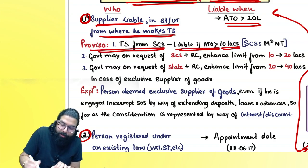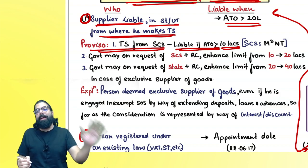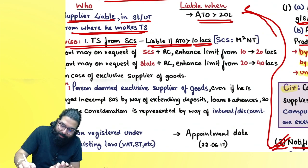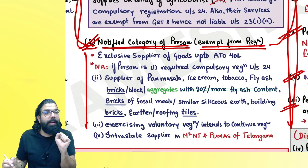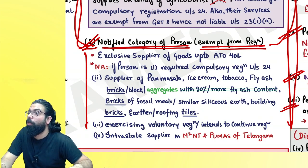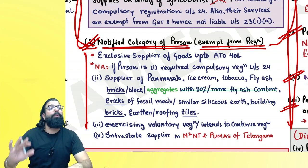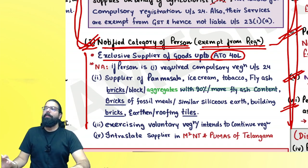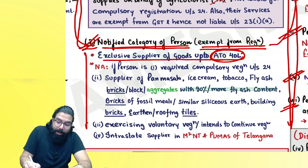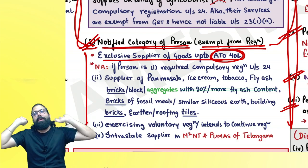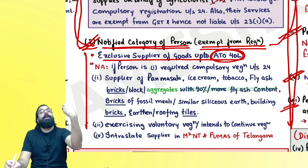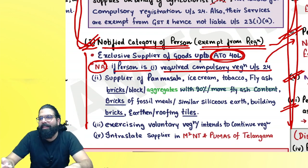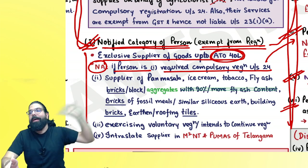The special category states are M² and T — Manipur, Mizoram, Nagaland, and Tripura. Section 22(1) has to be read with section 23(2): the government has issued a notification exempting exclusive suppliers of goods up to an aggregate turnover of ₹40 lakh from registration. However, this ₹40 lakh limit is not available if you are required to take compulsory registration under section 24, or if you supply pan masala, ice cream, tobacco, fly ash bricks, blocks, or aggregates.